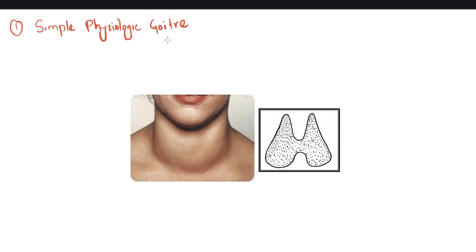Let's talk about simple physiologic goiter, also known as diffuse hyperplastic goiter. There is diffuse hyperplasia of follicles.